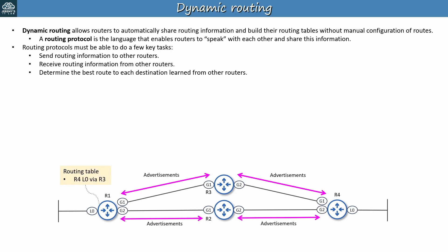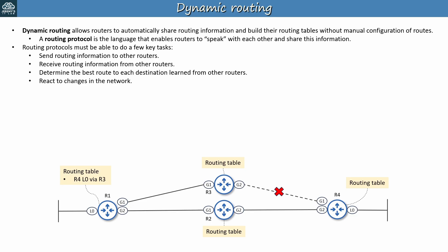For example, let's say R1 determines the path via R3 is the best path to reach R4's loopback 0 interface. Since this network uses all gigabit ethernet links, the paths via R2 and R3 should have the same cost by default, but let's say we modified the costs to make the path via R3 better. Now that the network has converged and each router has a stable routing table, the next key task is that the protocol must be able to react to changes in the network. Once again, the R3-R4 link fails. This triggers more advertisements from the routers, and R1 removes the route via R3 from its routing table. In its place, it installs the backup path via R2. The dynamic routing protocol allows R1 to react to this change in network topology without any manual intervention.